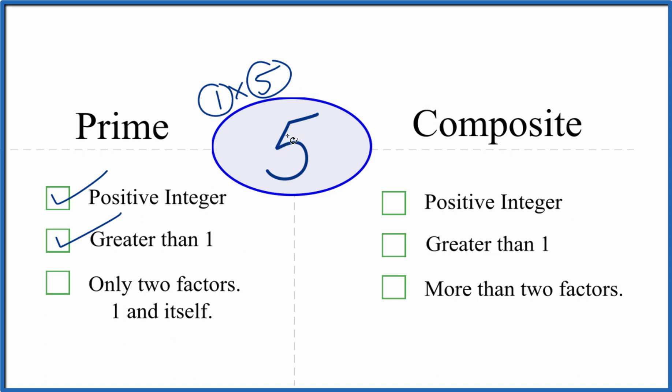But are there any more? Are there any numbers that divide evenly into 5? It turns out that there aren't. So there's only 1, 2. That means 5 is a prime number.